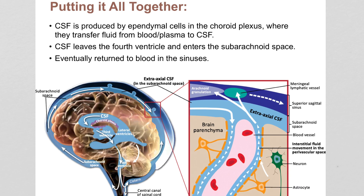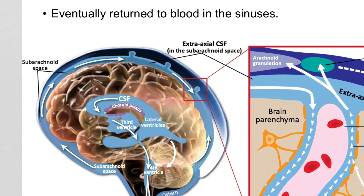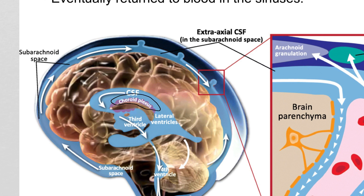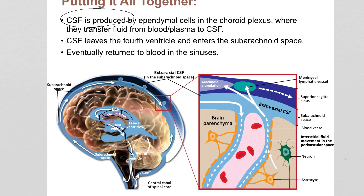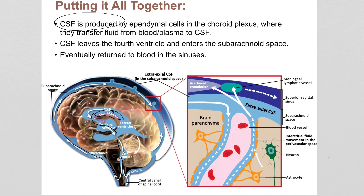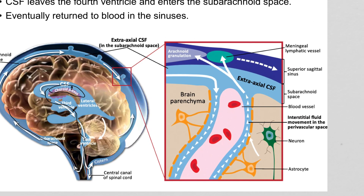Putting it all together: CSF is initially produced in the ventricles at the choroid plexus — the interface between blood vessels and ependymal cells that make CSF. That choroid plexus is within the lateral ventricles. CSF flows to the third, down into the fourth, and then out to the subarachnoid space, eventually leading all the way around the brain next to those sinuses. Once fluid enters the sinus, it's back to blood heading out to circulation to get cleaned up. Throughout brain tissue, arteries and capillaries are running everywhere, and the astrocytes you see here form that blood-brain barrier we'll look at next.